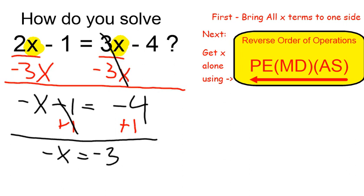Another way to see that algebraically is to multiply both sides by negative 1. Negative 1 times negative x is going to be positive x, and negative 1 times negative 3 is equal to positive 3.